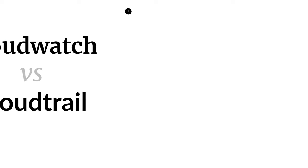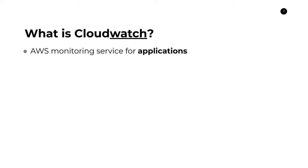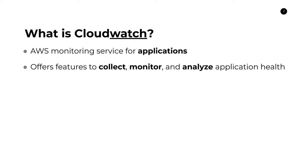So first of all, let's go ahead and talk about what is Amazon CloudWatch. Amazon CloudWatch is an AWS monitoring service that is meant for applications, and it offers features that allow you to collect, monitor, and analyze your application's health. Those three categories are the three main things that people use CloudWatch for.